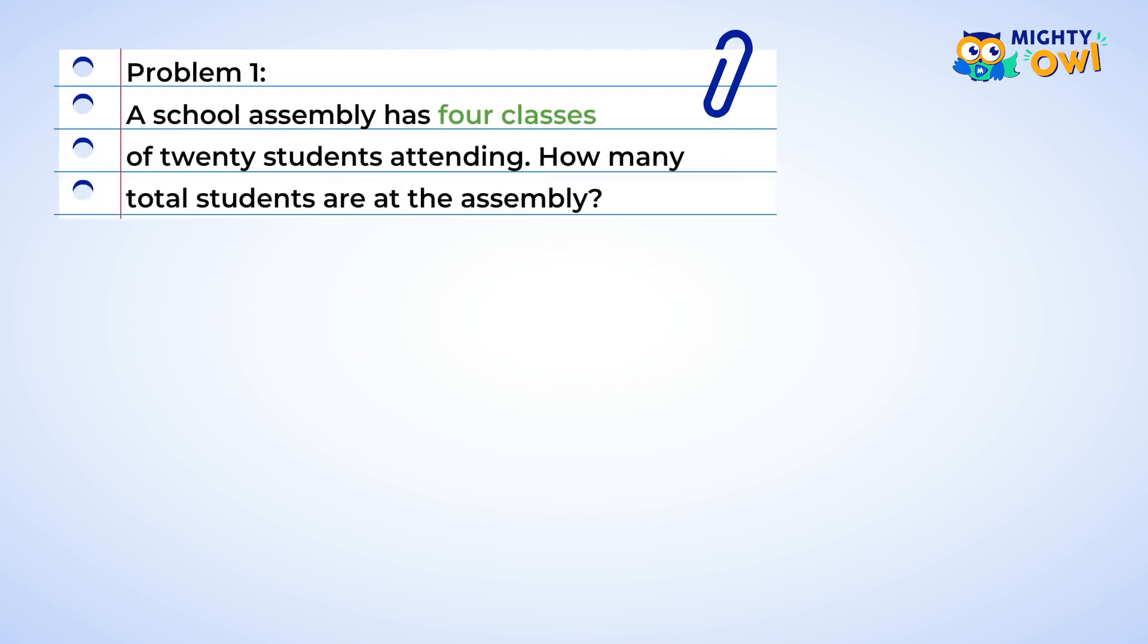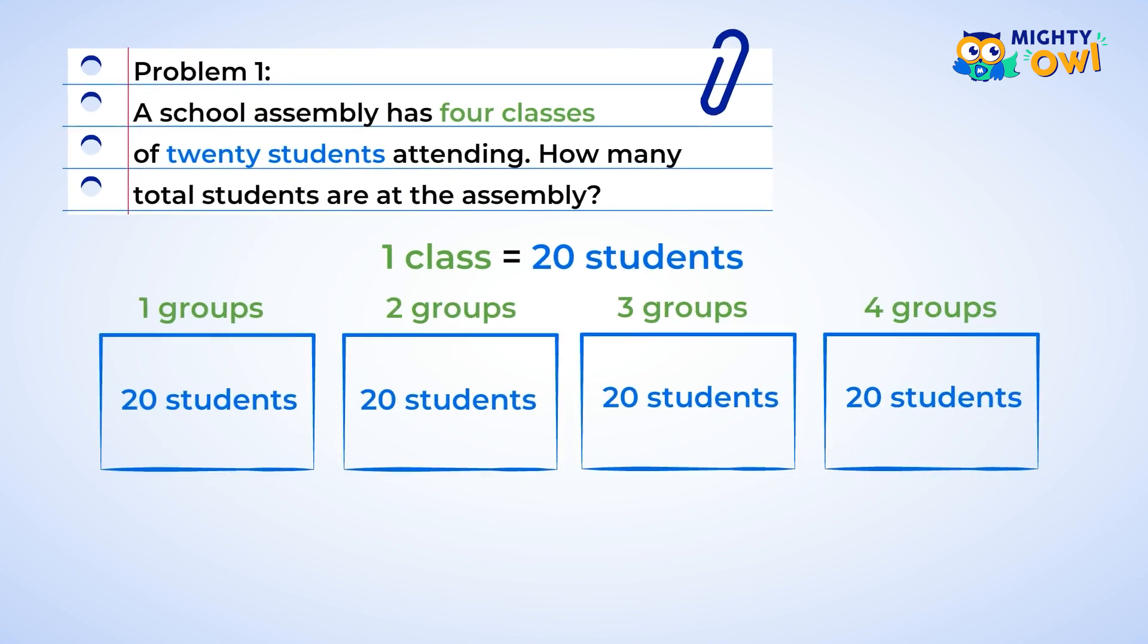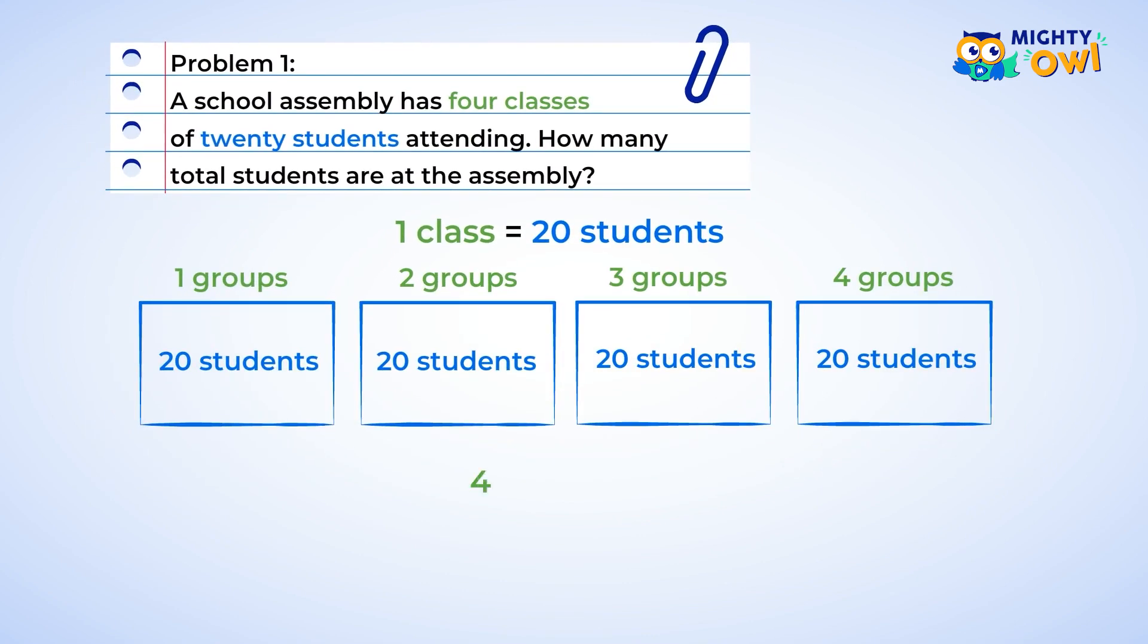A school assembly has four classes of twenty students attending. How many total students are there at the assembly? The classes are the groups, and so you would have four groups of twenty. This means you're being asked to multiply four times twenty. First, look at this as four times two. It's a little less scary that way. Eight. Now, since you were multiplying by twenty, or two tens, you need to add a zero into your final answer. This makes eighty, or eight tens. Awesome job! So that means that there are eighty total students at the assembly.